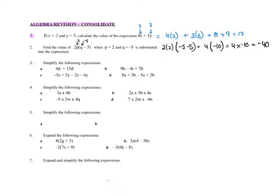With question 3, when we have to simplify the expressions, we can only add terms if they're like. So for example, this is 4d and this is 15d. They are like terms, so we could add them together. So if you have 4d plus 15d, that is 19d.